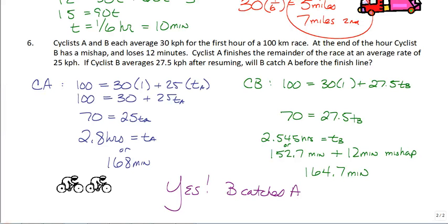If you said that B catches A, you are correct, as long as your numbers are correct. So, cyclist A does 30 miles per hour for the first hour, then finishes the race at 25 miles per hour, or kilometers per hour, and that's for 70 remaining after cyclist B had his mishap. So, it takes 2.8 hours for cyclist A to finish the race after the mishap. Now, although it did take him a total of 3.8 hours, since cyclist A and B were even after one hour, the rest doesn't really, I mean, it doesn't matter if you include that or not. It's how fast they finish the last part of the race that matters. So, the way I did this problem is it took 2.8 hours for him to finish the race, which is 168 minutes.